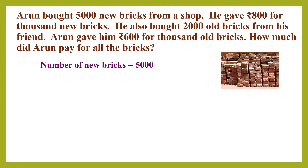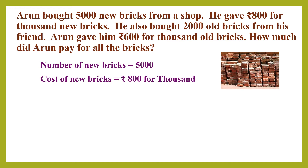Now step 2 — read the second sentence: he gave 800 rupees for 1000 bricks, so cost of new bricks is equal to 800 rupees for 1000. What we have to find now is the cost of 5000 new bricks. For 1000 new bricks it is 800 rupees, so for 5000 bricks it is 5 times 800, that is 800 into 5. Cost of 5000 bricks is equal to 800 into 5, which equals 4000 rupees.